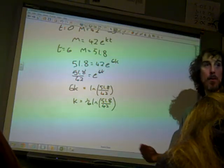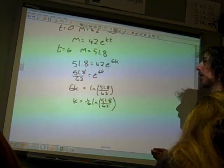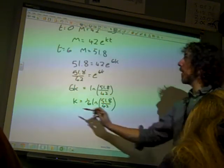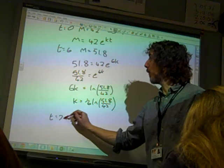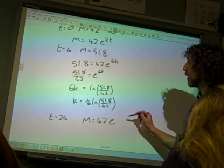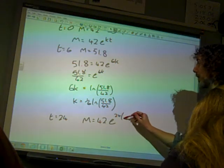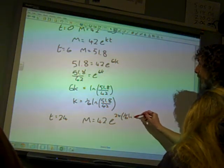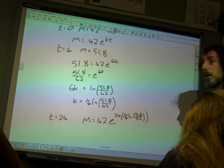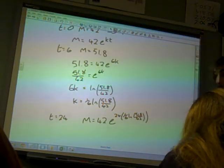And now we need to find the value of m when t is 24. So, if t equals 24, m is 42e to the 24 times that value of k, 1 sixth ln 51.8 over 42. And if you put that into your calculator...